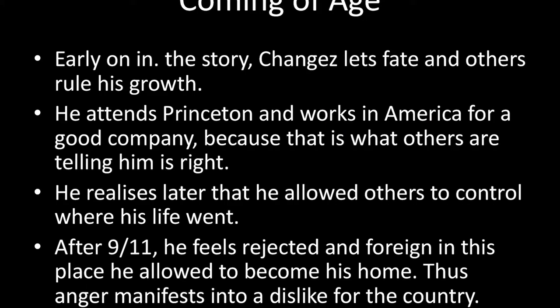Coming of age is an important theme. Early on in the story, Changez lets his fate and others rule his growth. He attends Princeton and works in America because that is what others tell him is right. But later he realises he allowed others to control where his life went and wants to take control again. After 9/11, he feels rejected both by America and by his lover Erica, and feels very foreign in the place he allowed to become his home. This anger manifests into a dislike for the country, which he ultimately leaves.